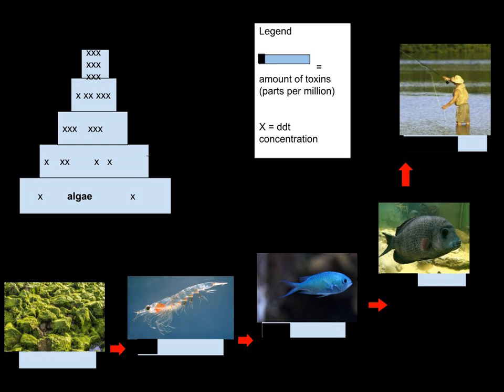Lipid, lipophilic, or fat-soluble substances cannot be diluted, broken down, or excreted in urine, a water-based medium, and so accumulate in fatty tissues of an organism, if the organism lacks enzymes to degrade them. When eaten by another organism, fats are absorbed in the gut, carrying the substance, which then accumulates in the fats of the predator. Since at each level of the food chain there is a lot of energy loss, a predator must consume many prey, including all of their lipophilic substances.